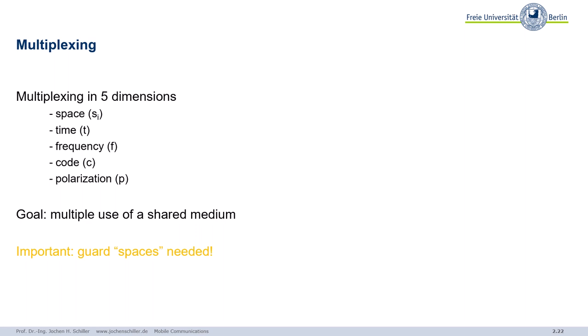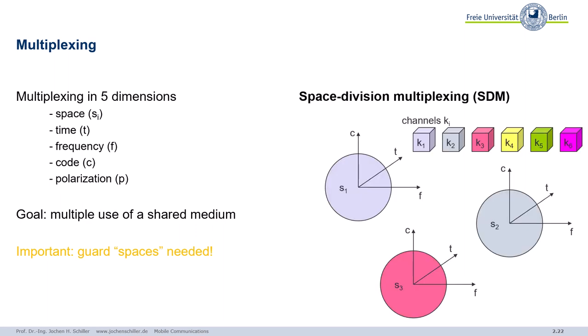It's very important to have certain guard spaces. In space multiplexing it's real three-dimensional space; in time multiplexing these are time gaps; in frequency multiplexing there are frequency gaps, and so on. Let's start with the first multiplexing scheme: Space Division Multiplexing, or SDM.